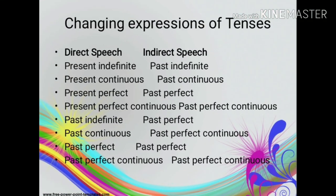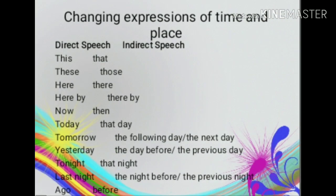Changing expressions of tenses is observed in this slide. Present indefinite in direct speech is changed to past indefinite in indirect speech. Present continuous to past continuous. Present perfect to past perfect. Present perfect continuous to past perfect continuous. Past indefinite to past perfect. Past continuous to past perfect continuous. Past perfect to past perfect, and past perfect continuous to past perfect continuous — these last two remain unchanged.